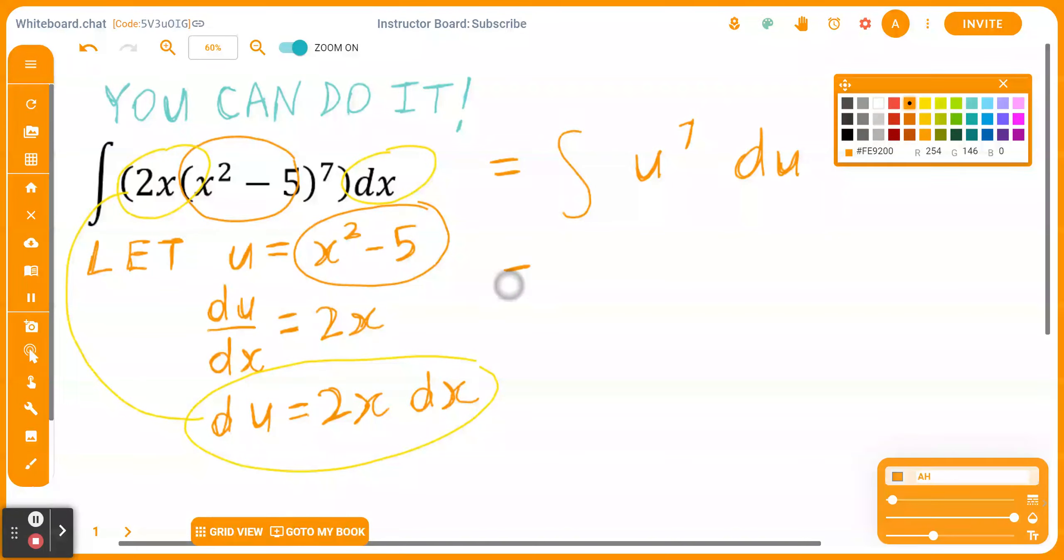Now, don't forget, when you're finding the antiderivative of u to the power of 7, you have to add the exponent by 1 divided by the new exponent. So in this case, it's going to be u to the power of 8 divided by 8 plus a constant c.